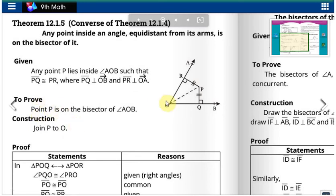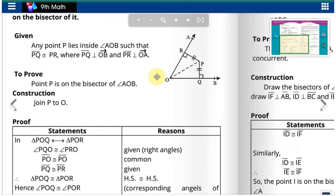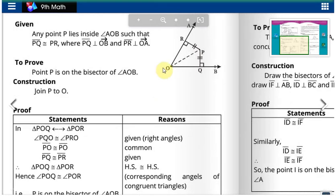So we have to construct P to O, a dotted line. These two triangles will be congruent because both are right triangles with a common side, and given is that PQ and PR are congruent.